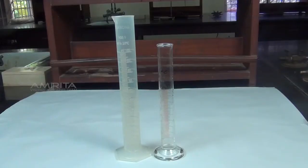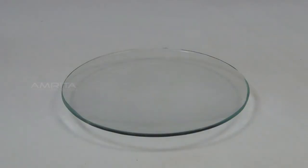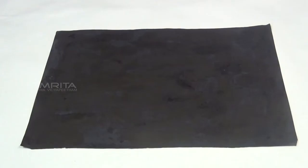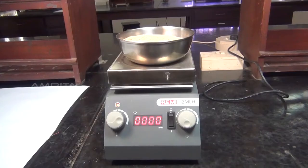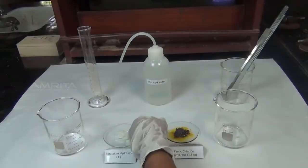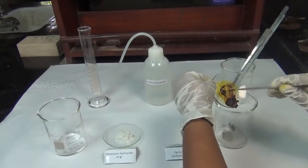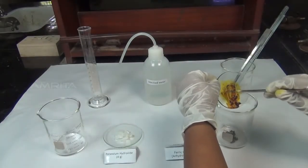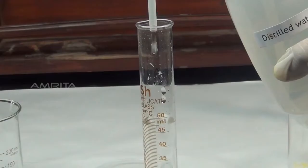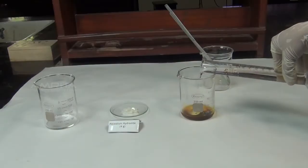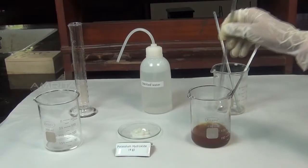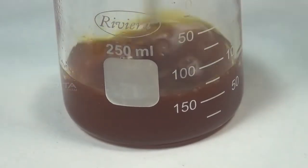Procedure: Take about 3.5 g anhydrous ferric chloride in a 250 ml beaker. To this add about 50 ml of distilled water using a measuring jar. Stir the solution using a glass rod to dissolve ferric chloride.